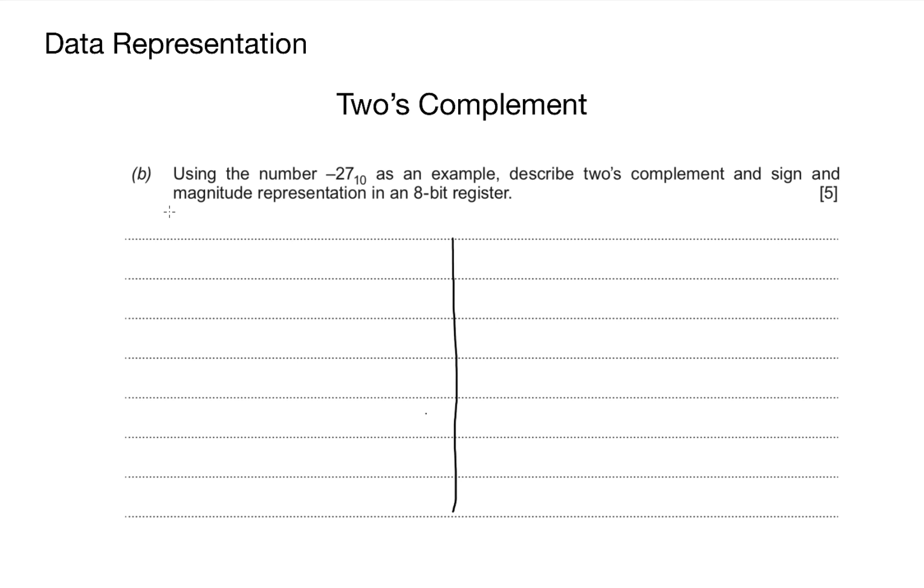We've already been through the explanation for two's complement, so I'm just going to write an example here. My example is +27, and underneath, I have taken up to and including the first bit, then inverted the other bits to produce -27.